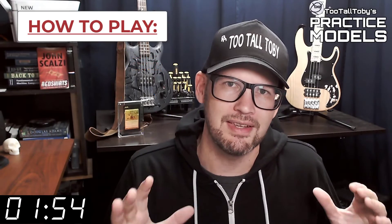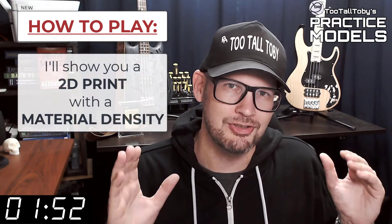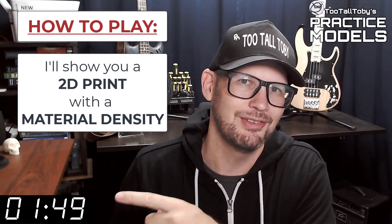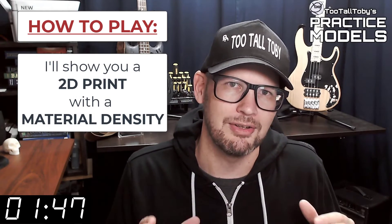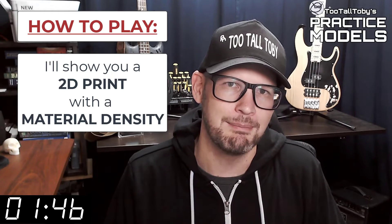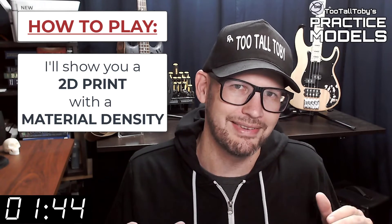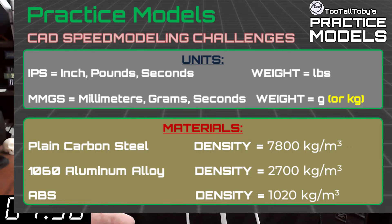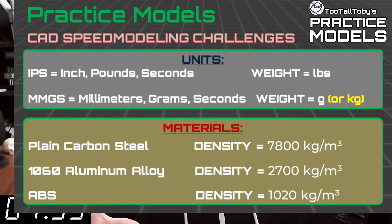So here's how these challenges work. I'm going to show you a 2D print when this timer gets to zero. On that print you're going to see a material property and material density — it's going to be one of these three material properties. So take a moment, grab a screen capture of what's on the screen right now, and be sure that your materials in your library match these properties.